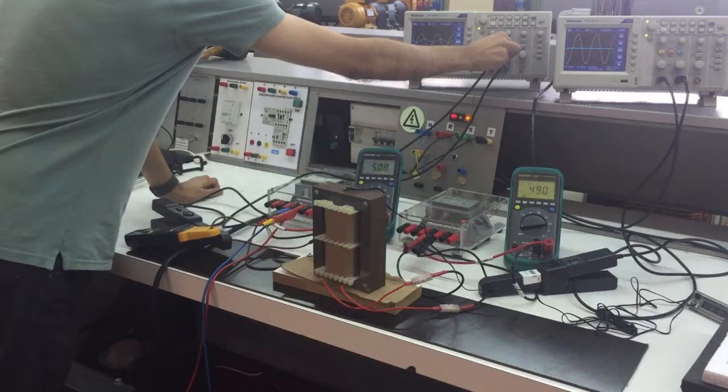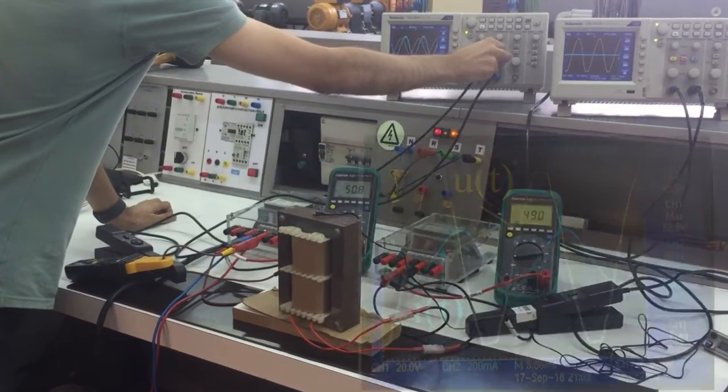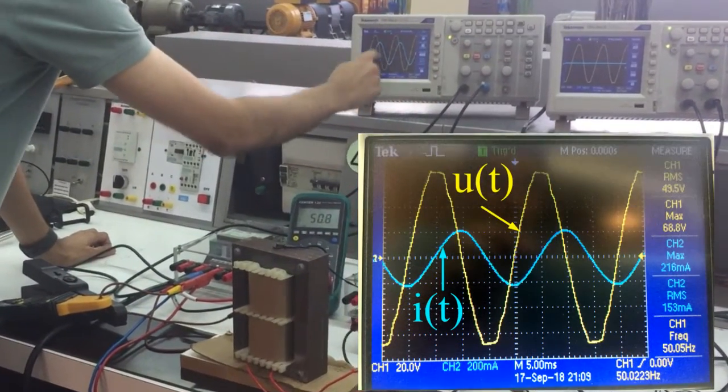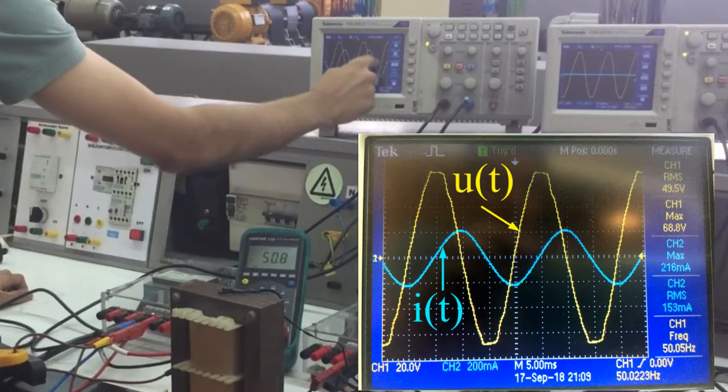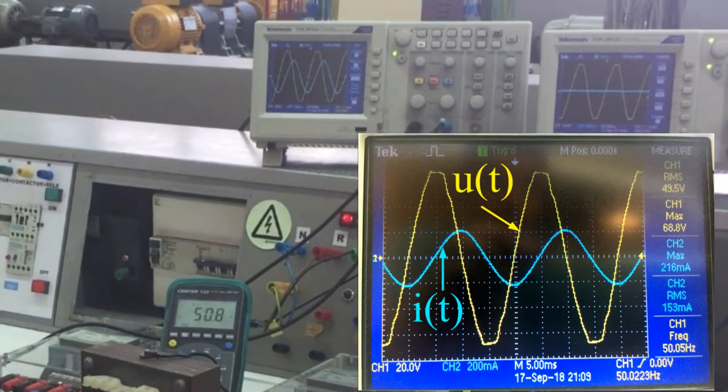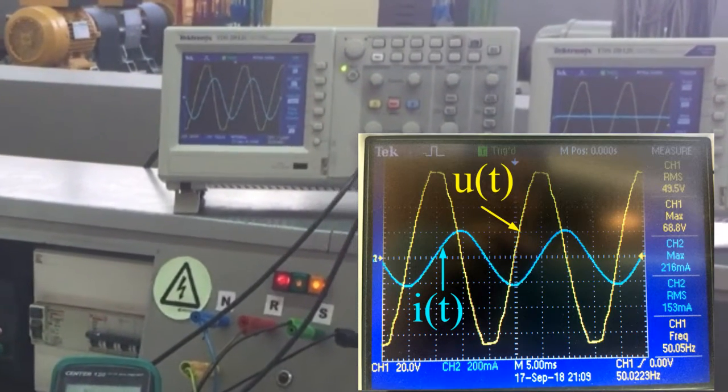In the oscilloscope, see the current and the voltage curves, and notice that the voltage is not sinusoidal, but the current is almost sinusoidal.